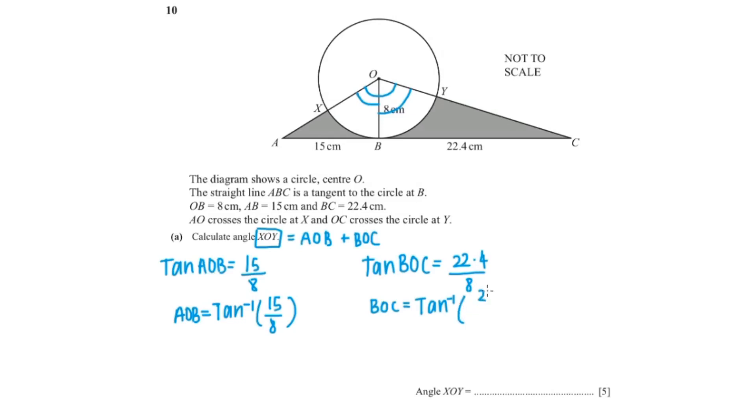So to calculate your XOY you would just add up the inverse of tangent 15 over 8 plus the inverse of tangent 22.4 over 8. And that would give you an answer of 132.27 which I'm going to round to 1 decimal place because we're finding an angle. So that's 132.3 degrees.